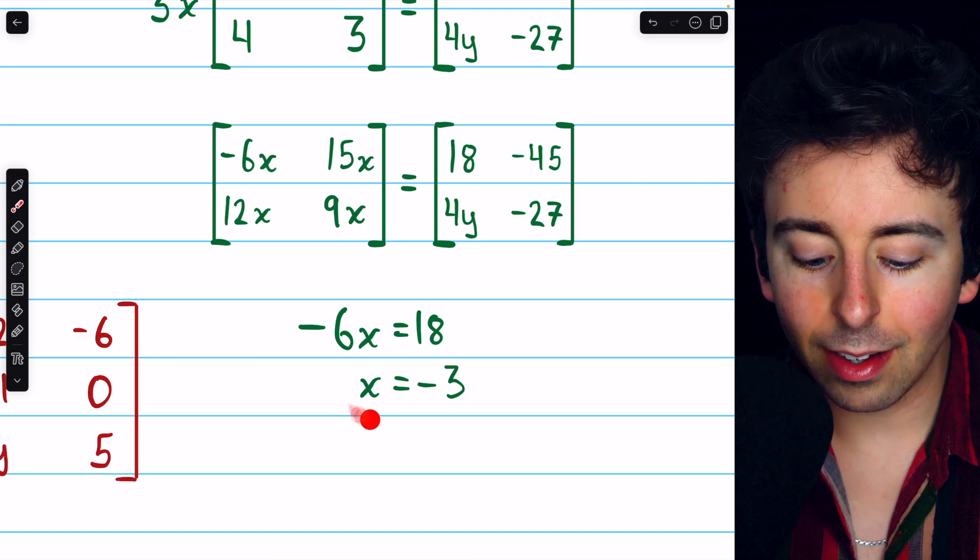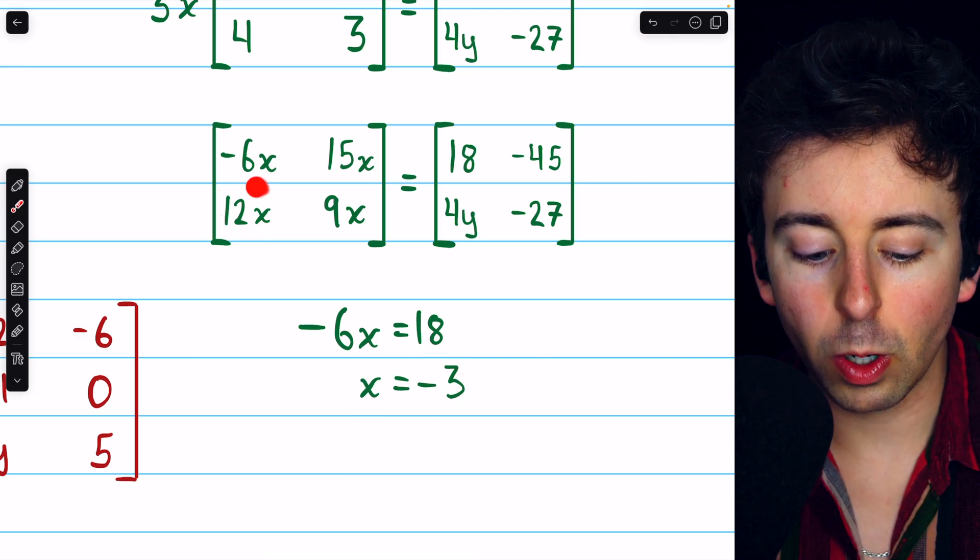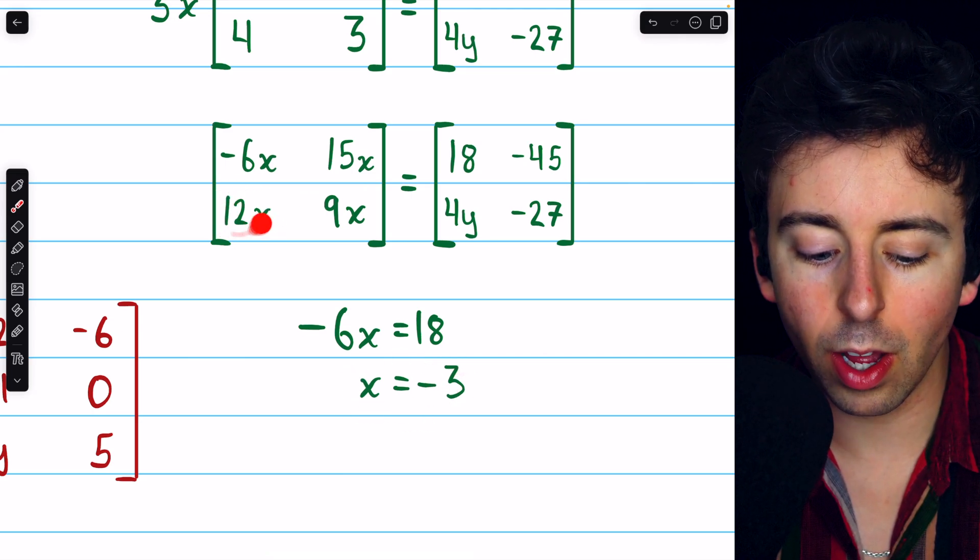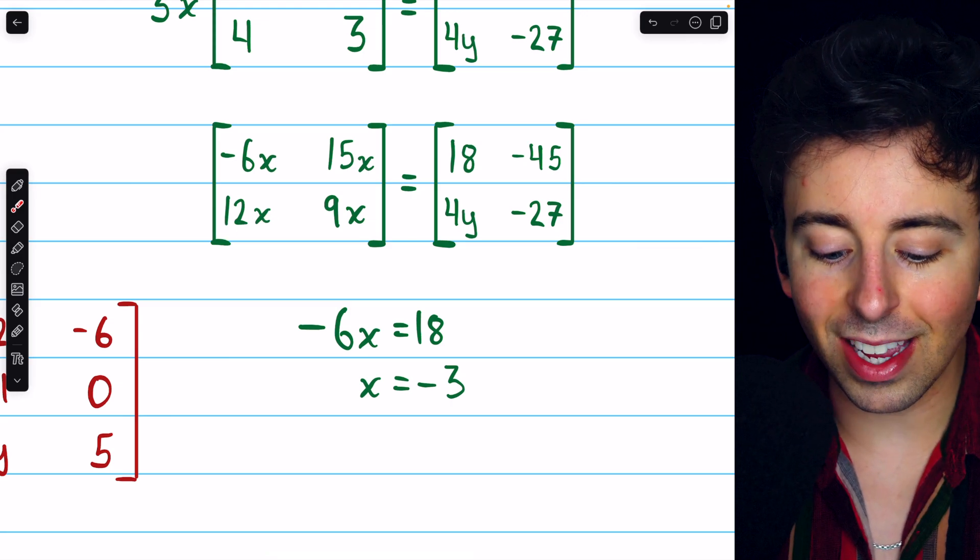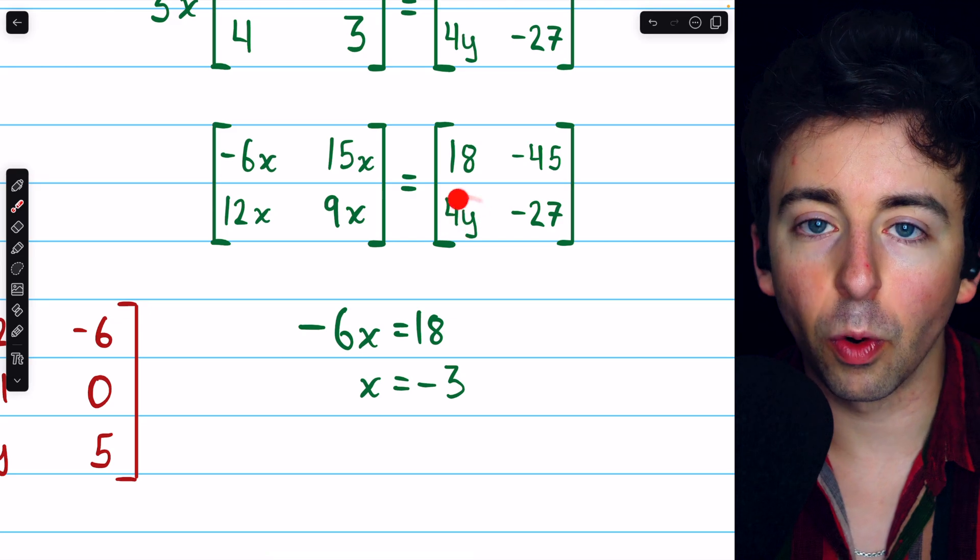Now, once we know that x equals negative 3, we know that this entry in row 2, column 1, is 12 times negative 3. And using that, we can solve for y.